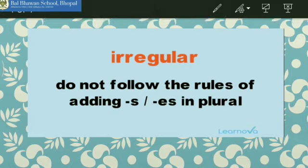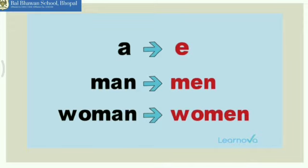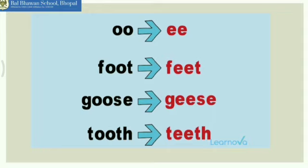With irregular nouns, we change the vowel. The vowel A is changed to vowel E. The example is man — M-A-N. We change it to men. Man is a singular noun, men is a plural noun. Another example is woman and women. The spelling is W-O-M-A-N, and women's spelling is W-O-M-E-N. We changed the vowel to make it a plural noun.